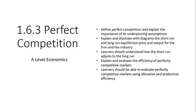In this video lesson, we're going to be going through perfect competition for A-level economics. The objectives are: we're going to define perfect competition and explain the importance of its underlying assumptions, explain and illustrate with diagrams the short-run and long-run equilibrium price and output for the firm and the industry, and look at how the model adjusts from the short-run to the long-run.